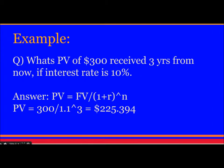Example: What is the present value of $300 received 3 years from now if the interest rate is 10%? Using the formula — Present Value = Future Value / (1 + r)^n — we substitute the values and get a present value of approximately 225.39.